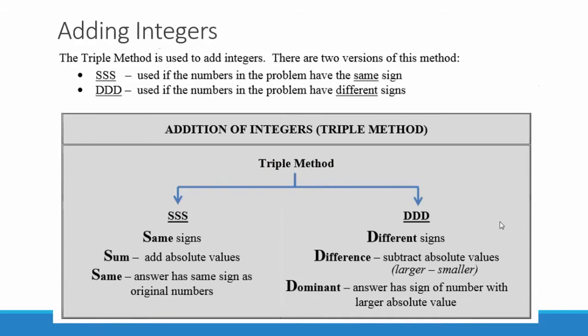We're going to discuss adding integers. We're going to use the triple method in order to add integers. This is a diagram of the thought process you should use as you figure out how to add two integers together.